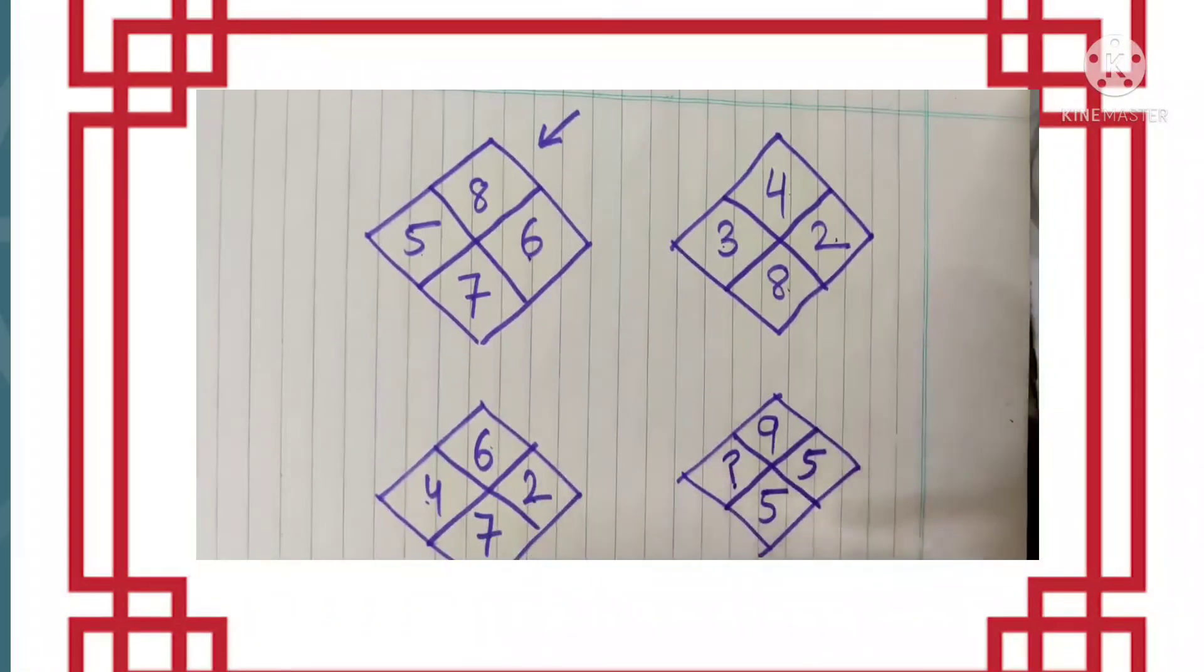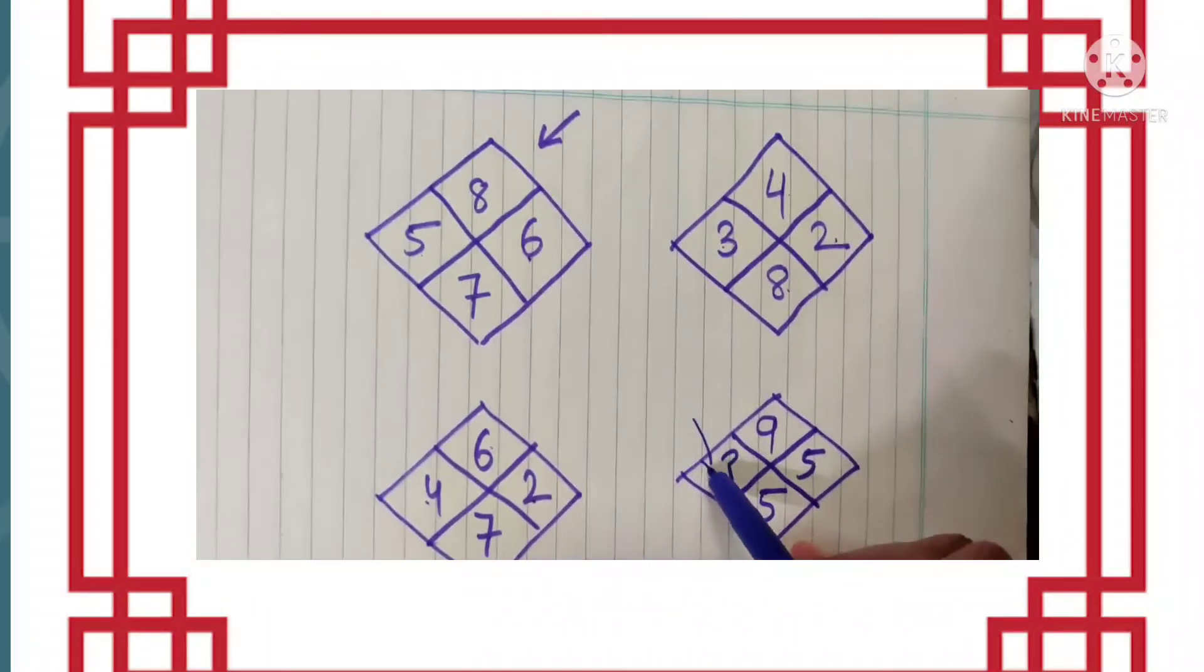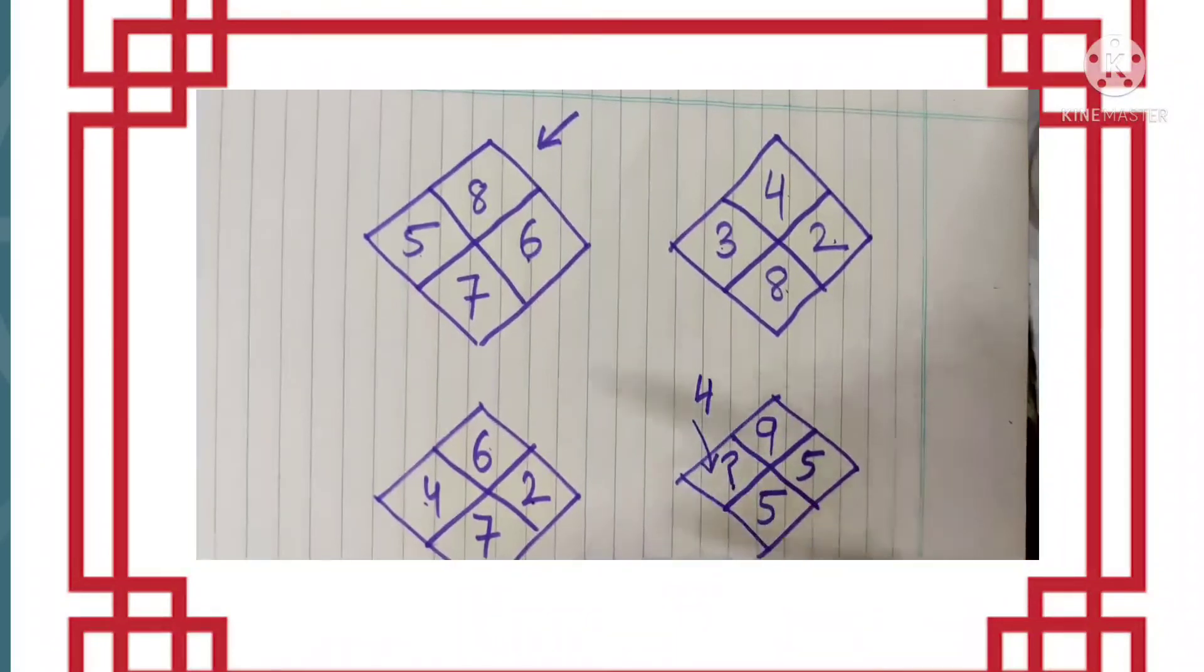I hope you got the answer. Yes, you are right, nine fives are 45, so here we get the number as four. Isn't it interesting?